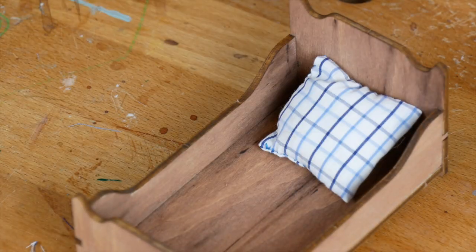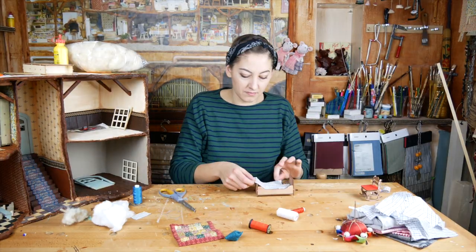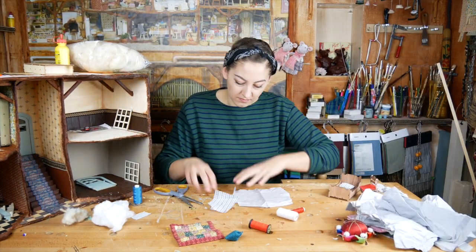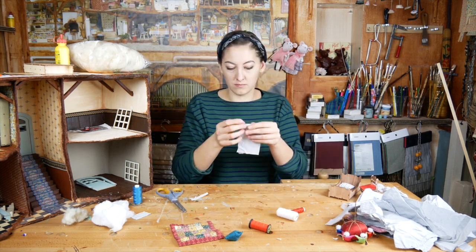We will also need a blanket for the bed. I used the same fabric as for the pillow for one side, and for the other side I used a different fabric. Soon you will see why. Cut out two rectangles of about 6 by 12 cm.